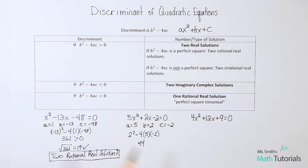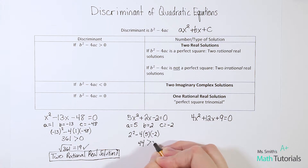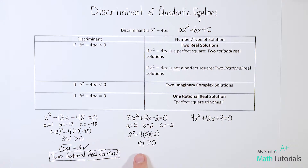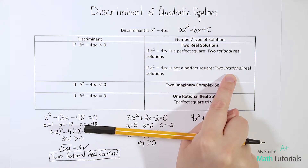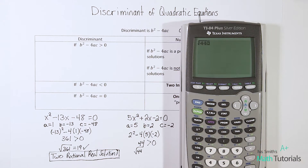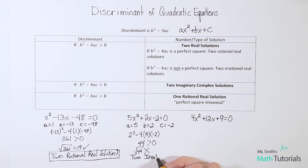So first we ask: is 44 greater than zero, less than zero, or equal to zero? It's definitely greater than zero, so we have two real solutions. Now we need to know — is it rational or irrational? Is 44 a perfect square? Taking the square root of 44 gives a long decimal, not a whole number. Because it is not a perfect square, we have two irrational real solutions.